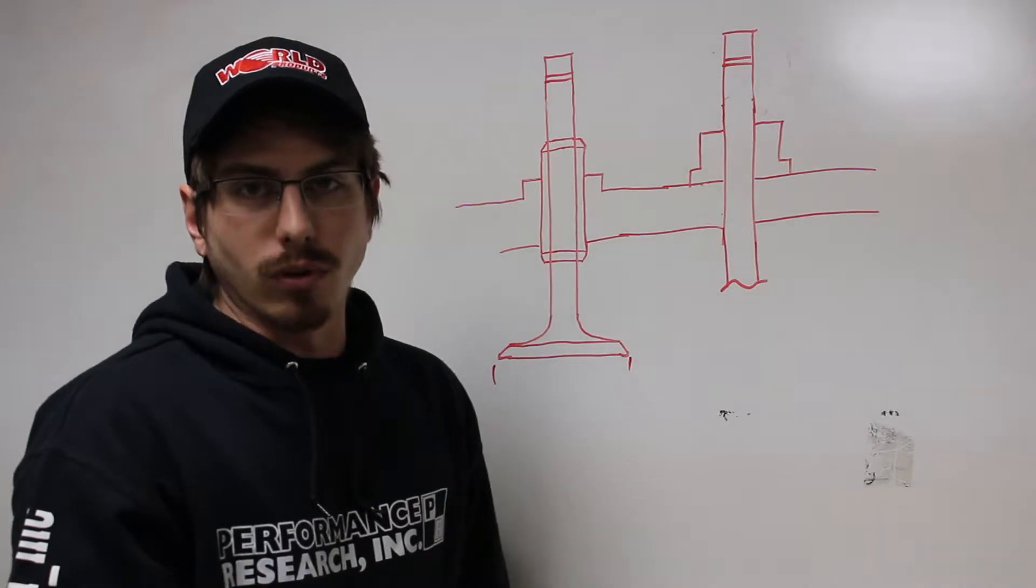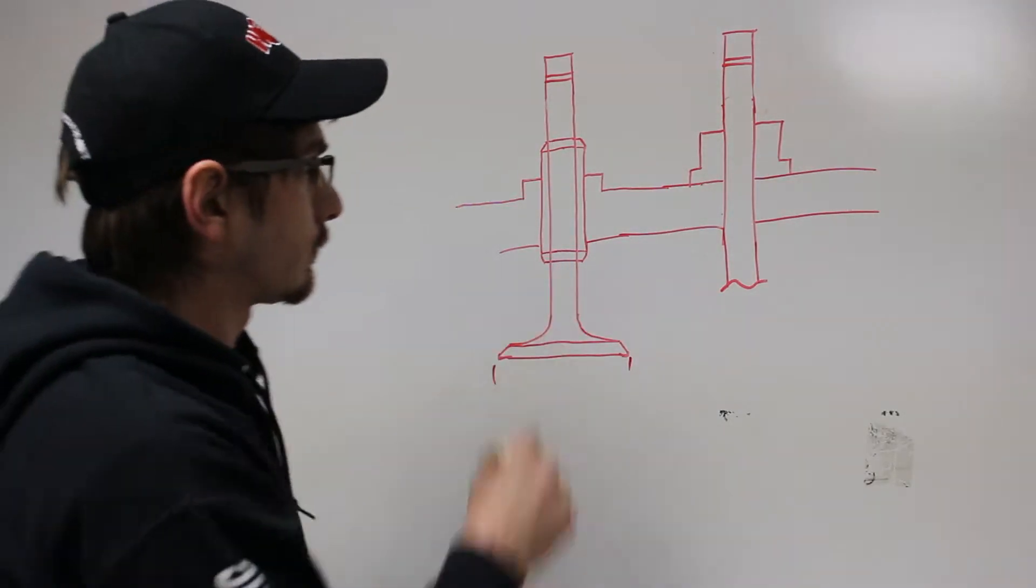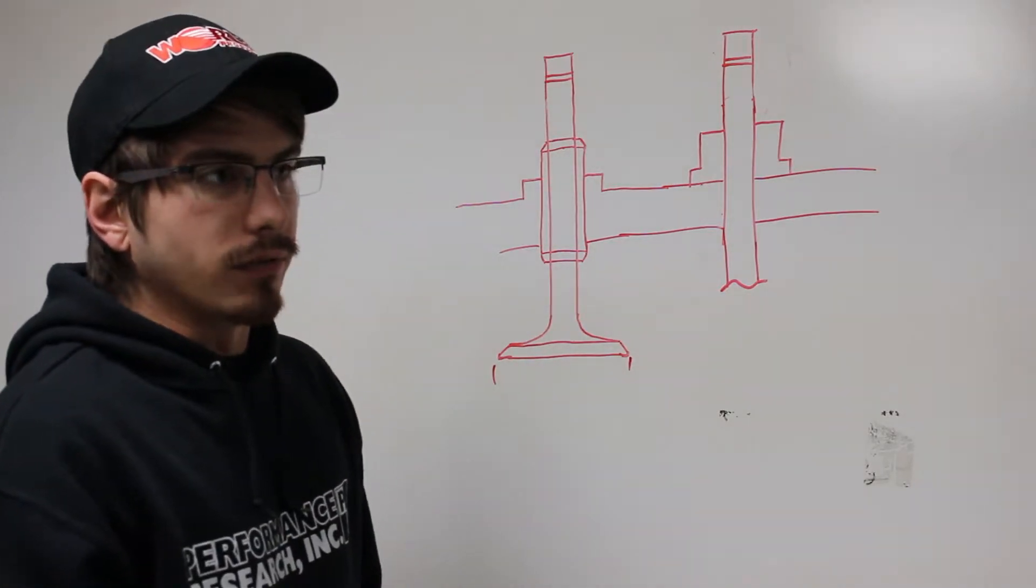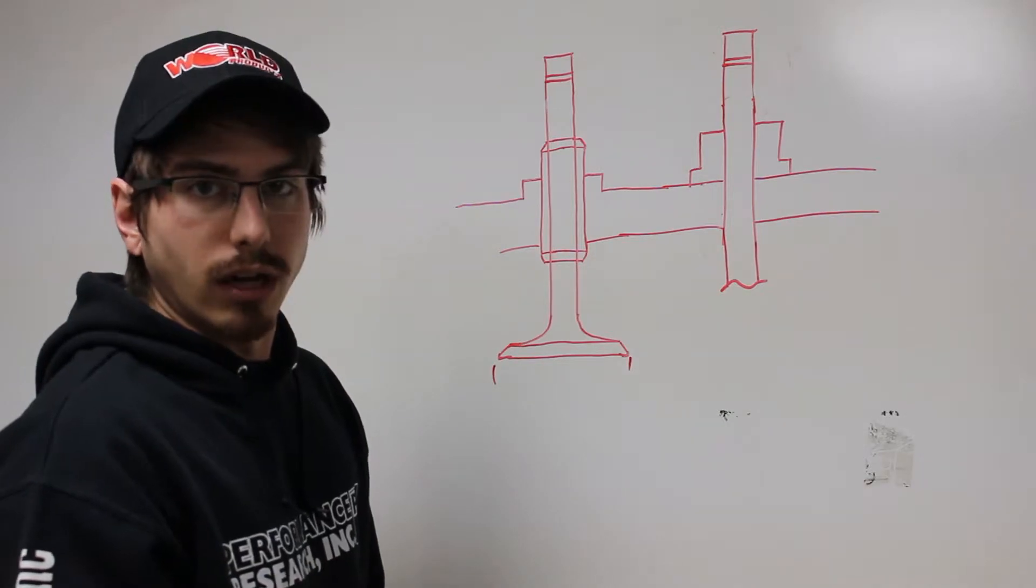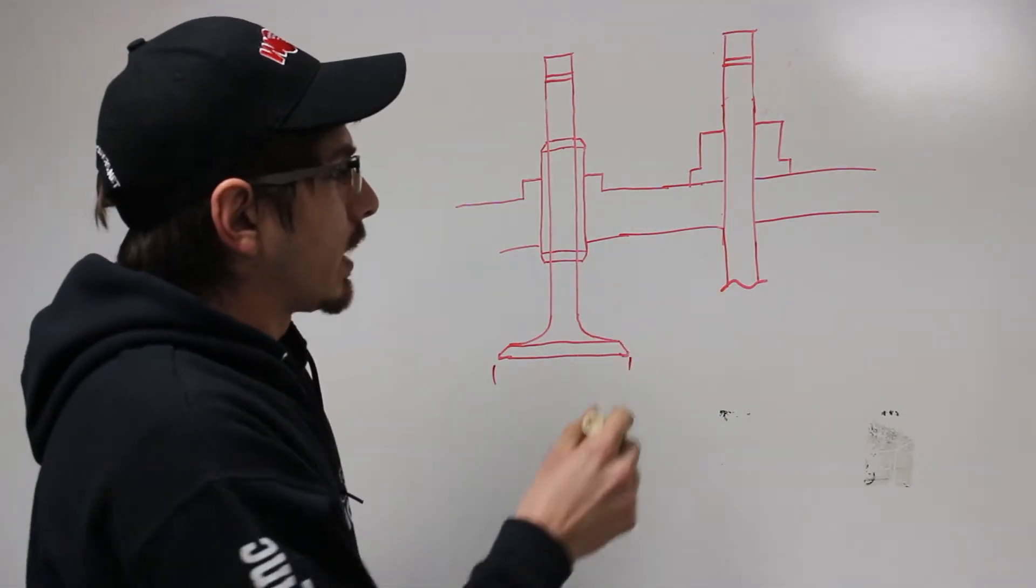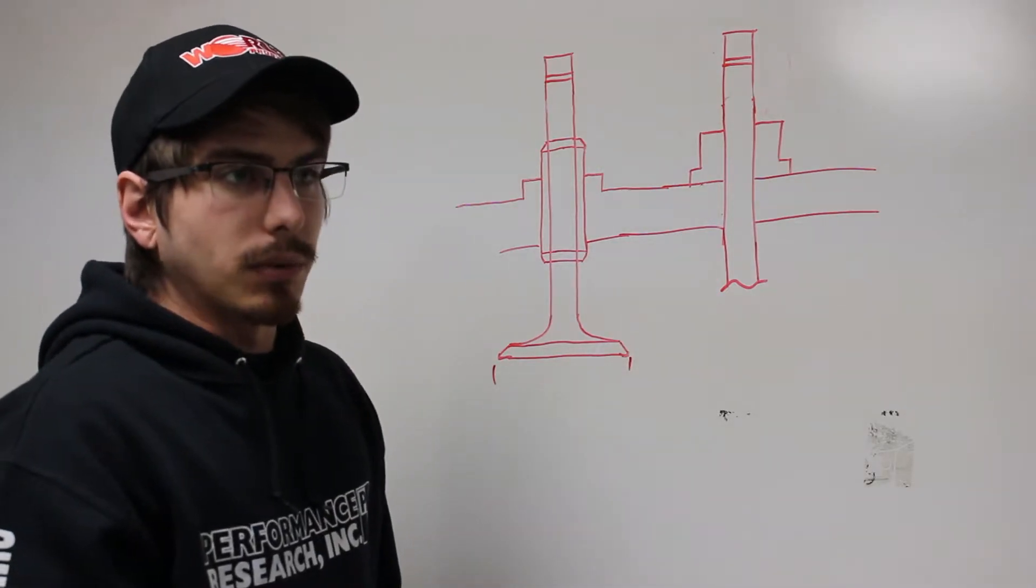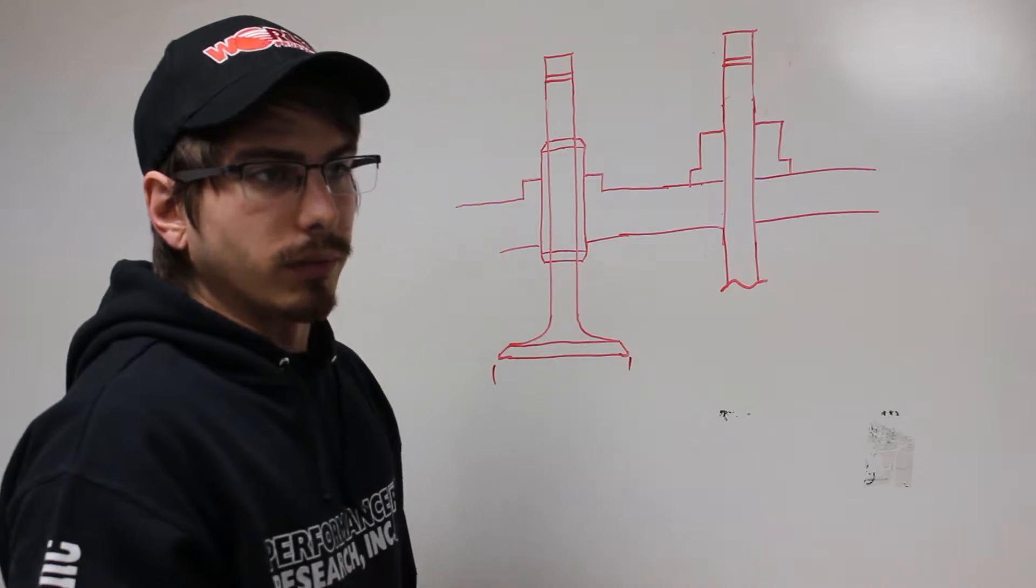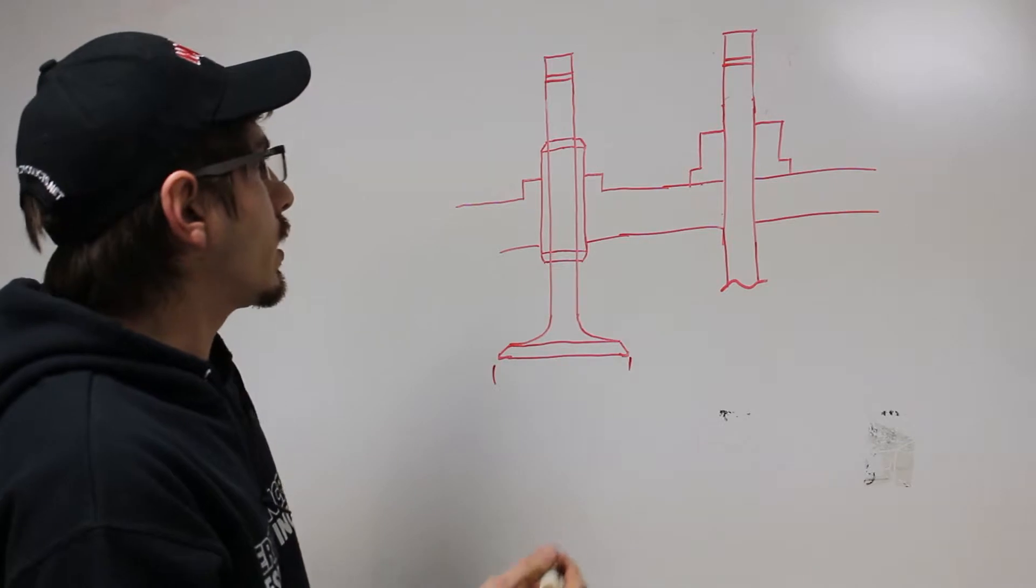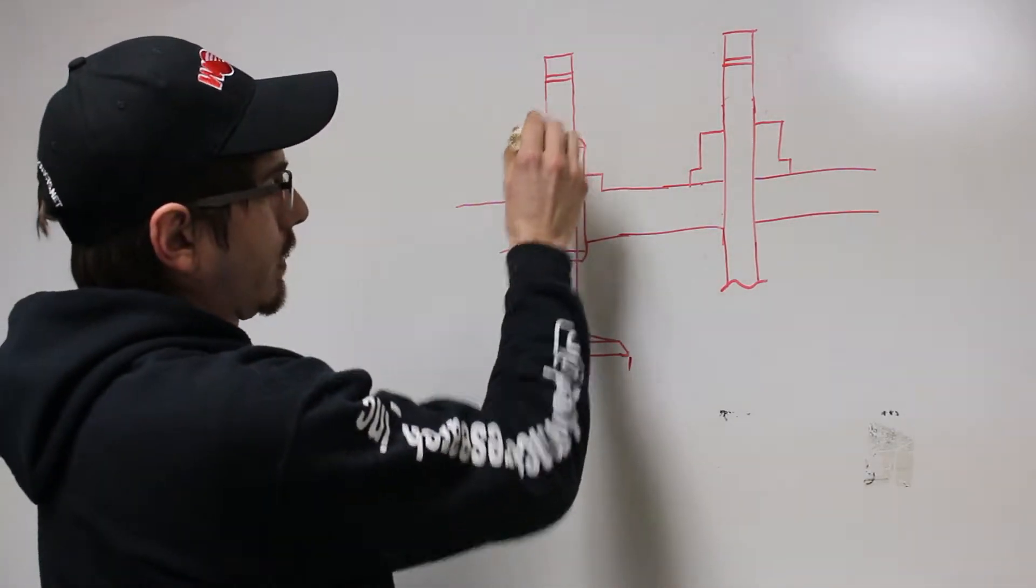Stem diameter that was commonly used back then was 3 eighths of an inch. Nobody uses 3 eighths valves anymore. Everyone uses 11/32nds, which is a little bit smaller. As a matter of fact, if you go into a catalog to order valves, it's actually pretty hard to find 3 eighths valves. So what we did here is we knew we had to get new valves for him anyway.